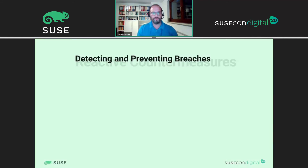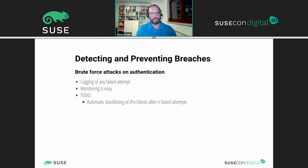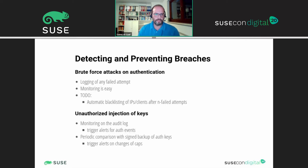For reactive countermeasures — what can we do to prevent brute force attacks? Logging of failed attempts and monitoring is very easy. The community is also thinking about how to automatically blacklist IPs after a number of attempts. To prevent unauthorized injection of keys, monitoring on the audit log should always trigger an alert in your monitoring. You should also periodically compare your auth keys with those stored, including the capabilities.